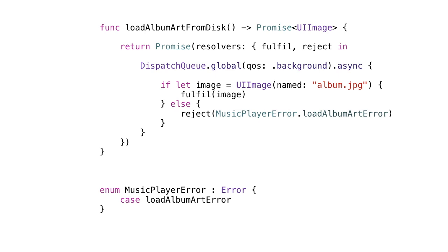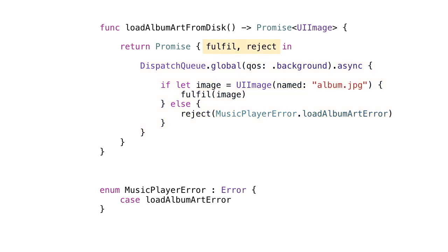Here's one way we could write the load-album-art-from-disk function. In this case we're invoking the init method of a promise object directly and passing in a fairly large closure. This closure is going to be executed here and now on the current thread when we create the promise. It takes two parameters called fulfill and reject, which are themselves closures — things we call when we're finished. We call fulfill with the thing we've successfully loaded, or we call reject with the error that has occurred, and when we do that the promise is resolved. This is a good structure to use for synchronous code.